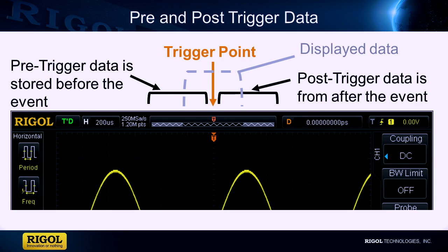Another important concept to understand in triggering is pre-trigger and post-trigger data. Typically, the scope places the trigger point in the center of the display. Points to the left of the trigger occurred before the trigger — this is the pre-trigger data. Points to the right are the post-trigger data, as they came after the trigger event.